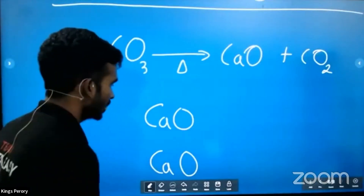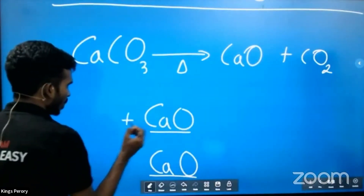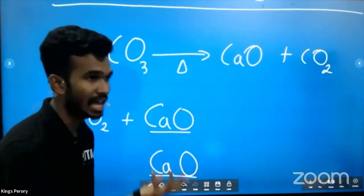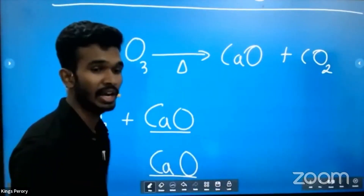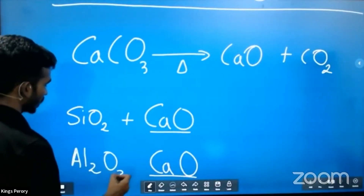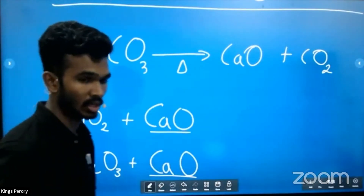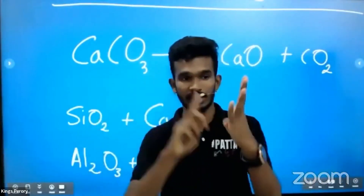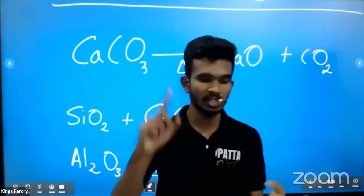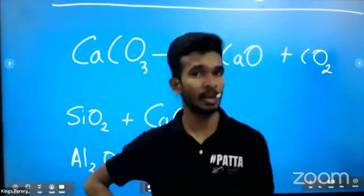Now use calcium oxide to remove impurities. The impurities are silicon dioxide (SiO2) — which is sand — and aluminium oxide (Al2O3). Calcium oxide reacts with silicon dioxide, and calcium oxide reacts with aluminium oxide. To write the products, simply add the elements together: CaO + SiO2 gives calcium silicate (CaSiO3); CaO + Al2O3 gives calcium aluminate (CaAl2O4).